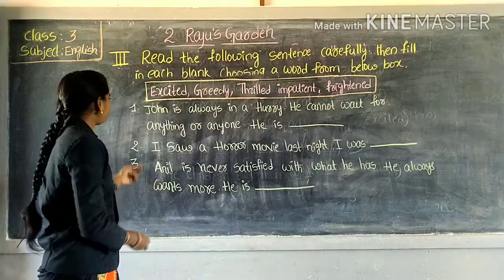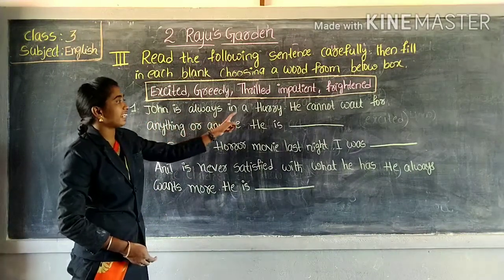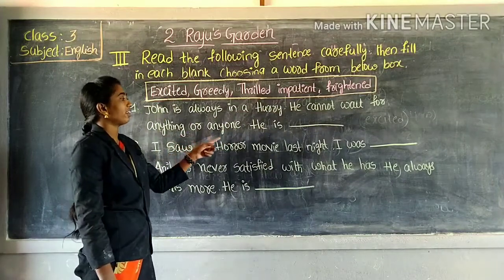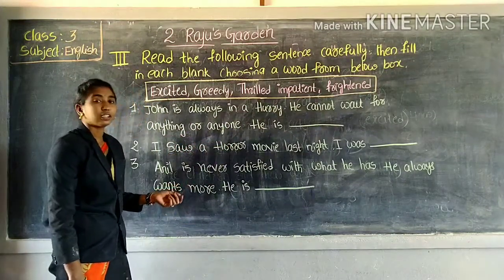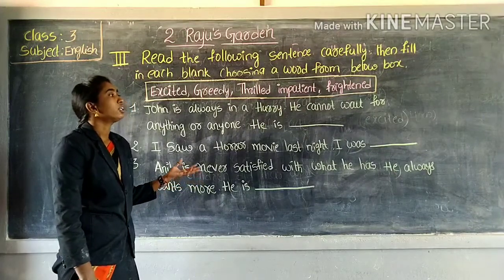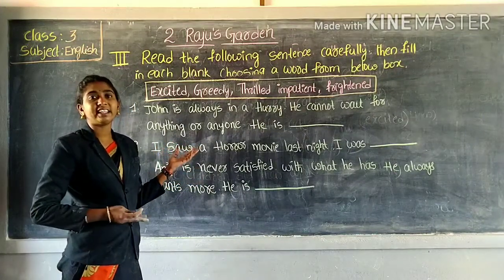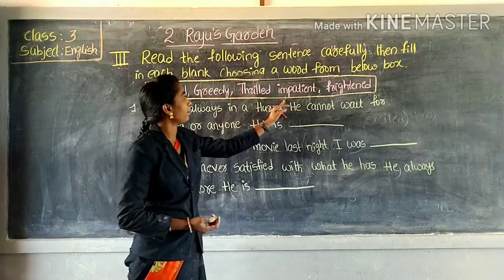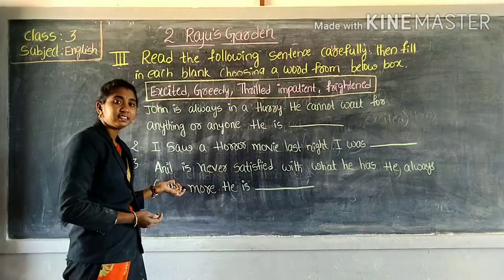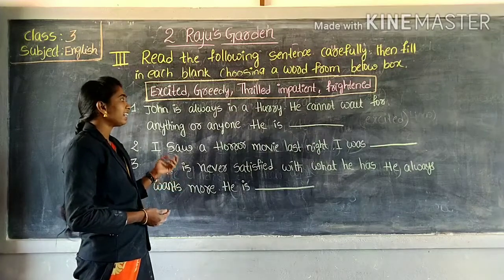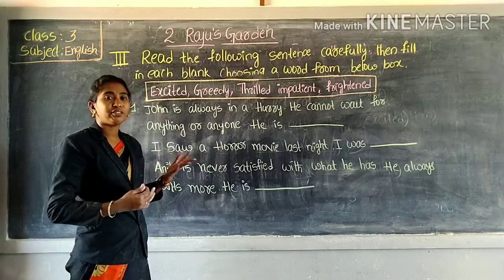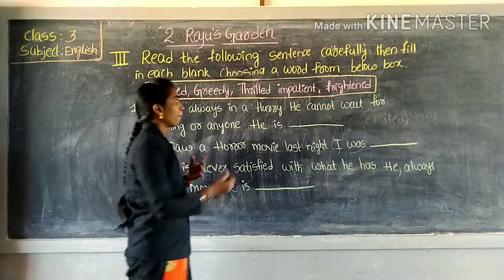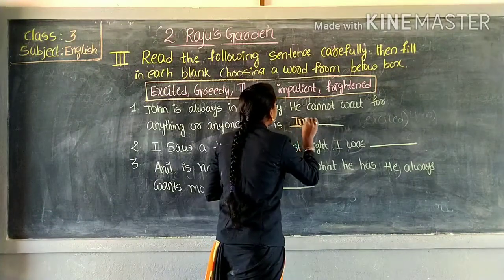Listen: first sentence — John is always in a hurry. He cannot wait for anything or anyone. He is excited, breathing, greedy, impatient, or frightened — which one is correct? He is impatient because he cannot wait for anyone or anything. Impatient means having no patience. So the first blank is impatient.